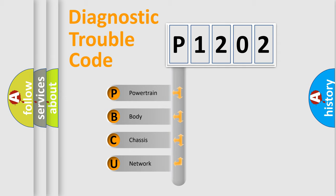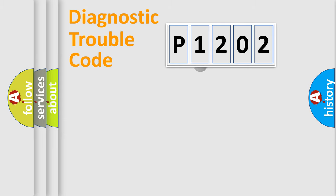We divide the electric system of automobile into four basic units: Powertrain, Body, Chassis, and Network. This distribution is defined in the first character code.